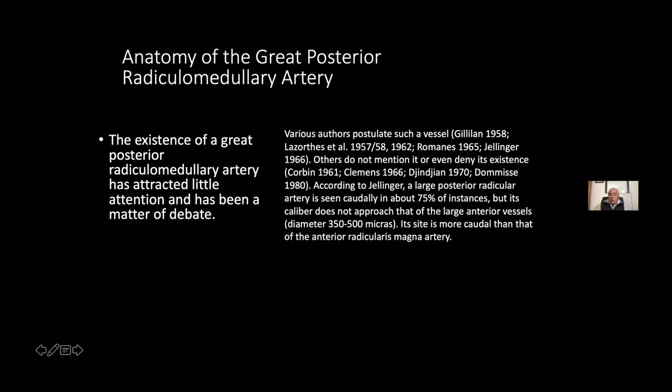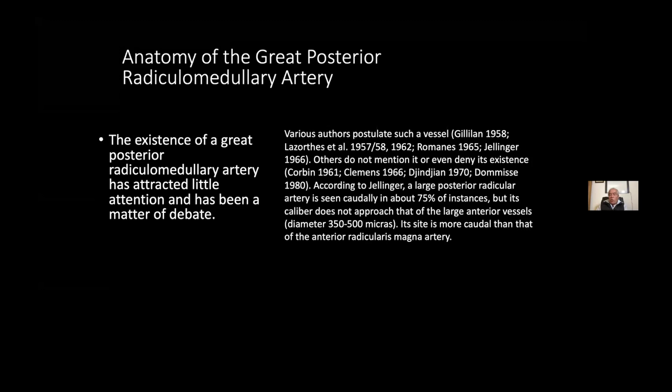According to Jenninger, a large posterior radicular artery is present in about 75%. But as you can see, this was about 60 to 70 years ago. We decided to make this investigation, this research about this artery, and we can see this very, very beautiful great posterior radicular medullary artery.